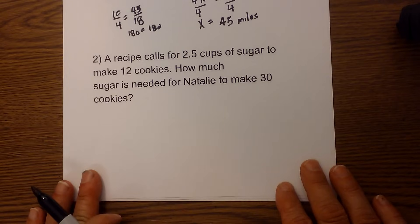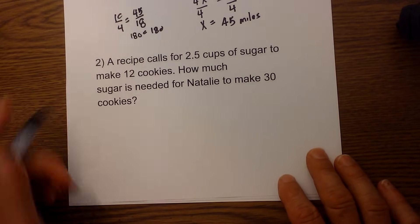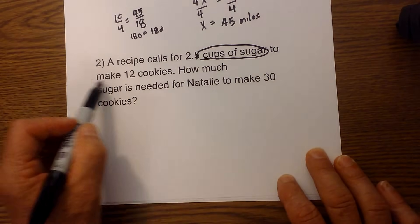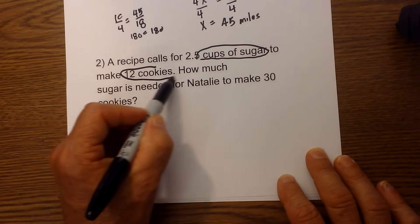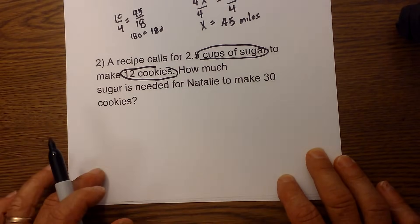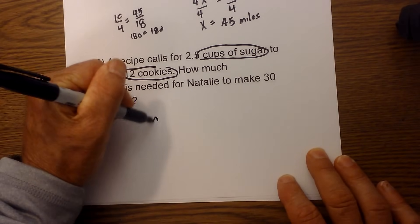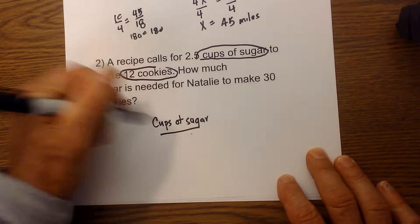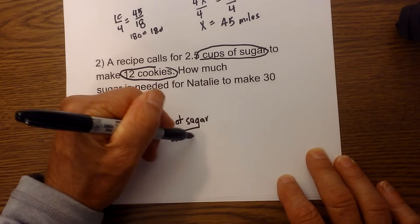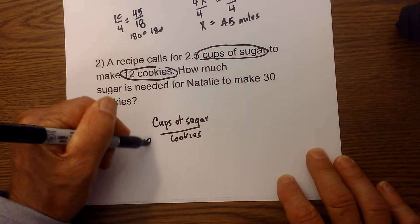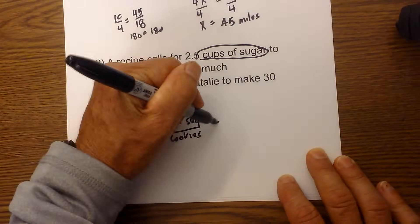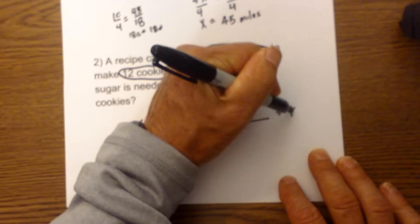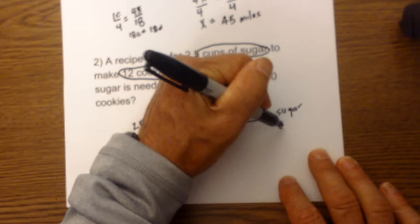Okay, let's look at the next sample problem and do the same. A recipe calls for 2.5 cups of sugar to make 12 cookies. How much sugar is needed to make 30 cookies? So I'm going to do cups of sugar over cookies, and then I'm going to fill in the blanks. I've got 12 cookies and 2.5 cups. Equals—I set up another fraction the same way: sugar over cookies.